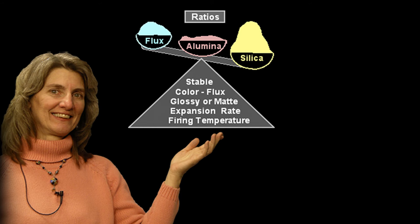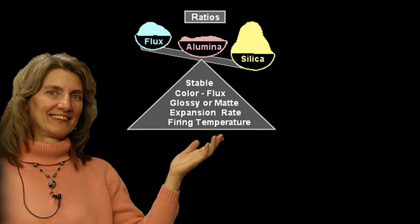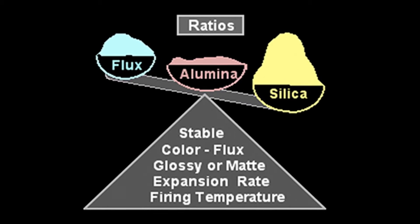The main components of a glaze are silica, alumina, and flux. The ratios of those three components affect the stability of the glaze for food safety, the color, the gloss or matte of the glaze, the expansion rate, and the firing temperature. By changing the ratios of these same ingredients and components, we affect those five factors.